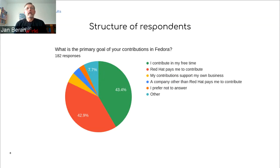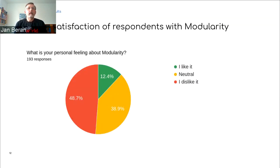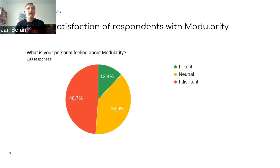We asked about how contribution is funded. 43% were Red Hatters and the same amount were contributing in their free time, which is interesting. The key question was how respondents are satisfied with modularity. The answer was not positive — only 12% said they like it, 39% were neutral, and almost half said they dislike modularity.